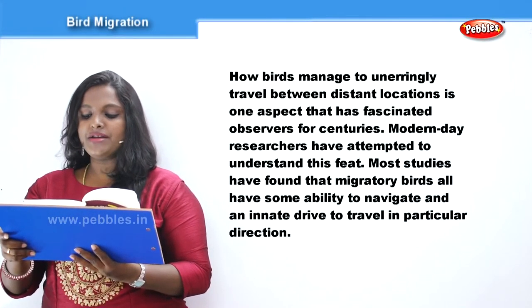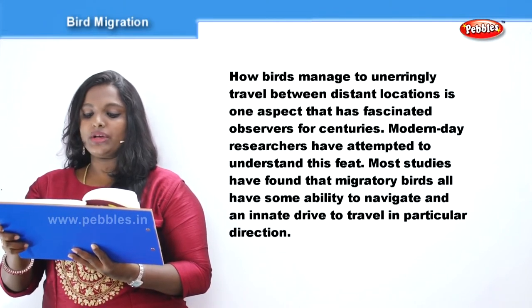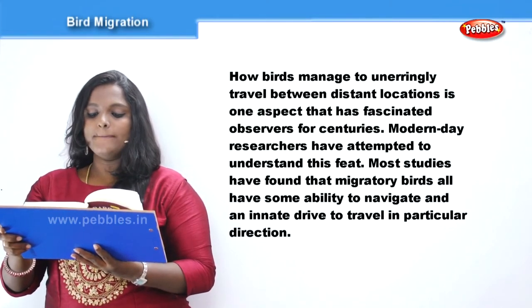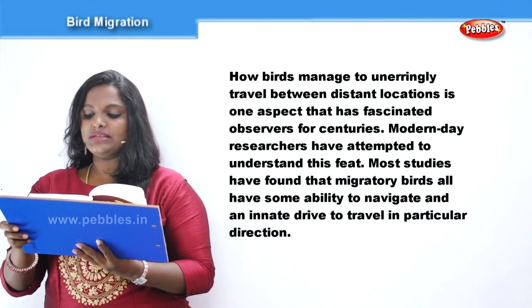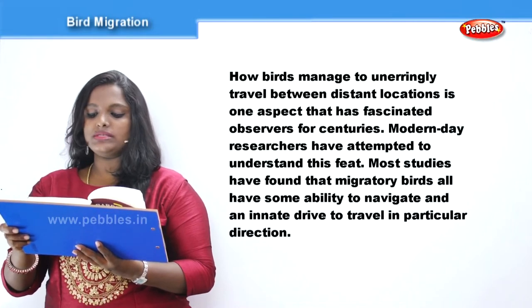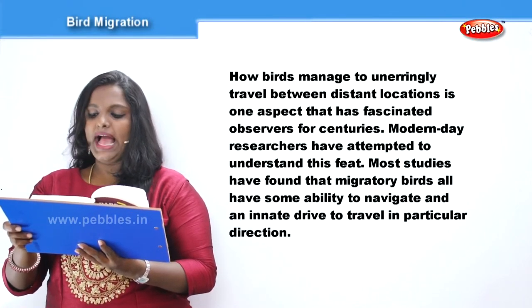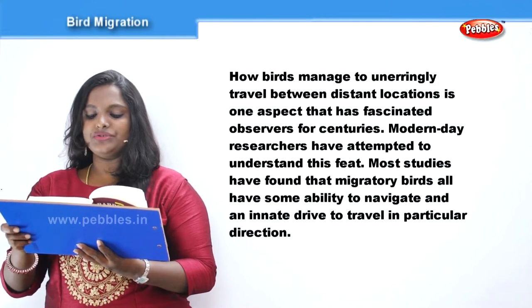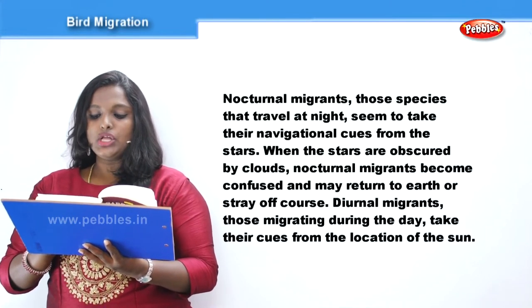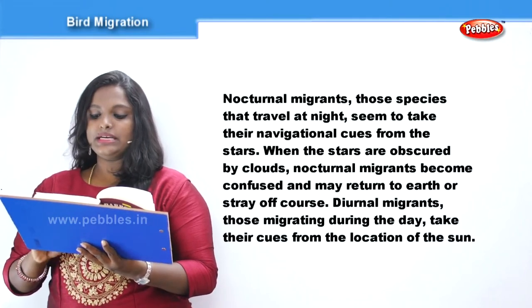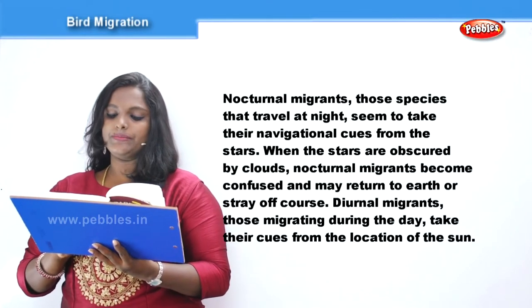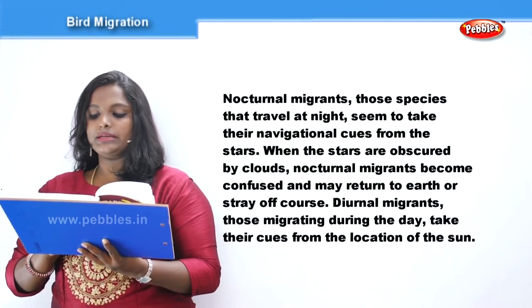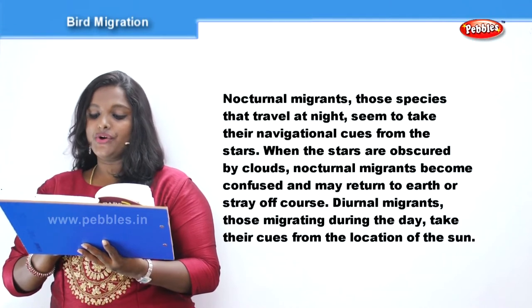How birds manage to unerringly travel between distant locations is one aspect that has fascinated observers for centuries. Modern-day researchers have attempted to understand this feat. Most studies have found that migratory birds have some ability to navigate and an innate drive to travel in a particular direction. Nocturnal migrants — those species that travel at night — seem to take their navigational cues from the stars. When the stars are obscured by clouds, nocturnal migrants become confused and may return to earth or stray off course.